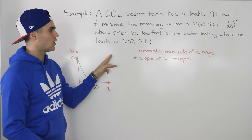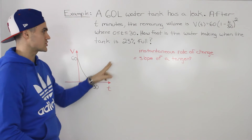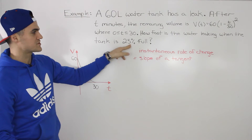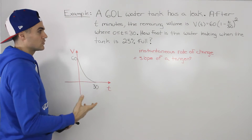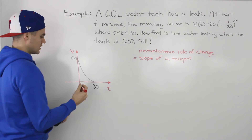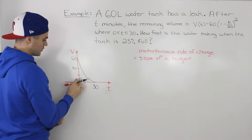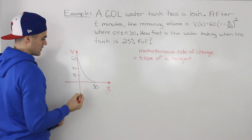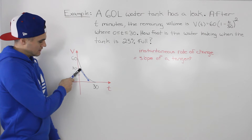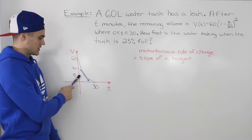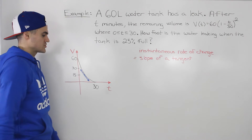We need to find the slope of the tangent when the tank is 25% full. The full tank is 60 liters, so 25% of 60 is 15 liters. On the graph, 15 liters is halfway between 0 and 30 on the volume axis. Drawing a tangent in blue at a volume of 15 liters, we need to find the slope of that tangent, which gives us the instantaneous rate of change when the tank is 25% full.